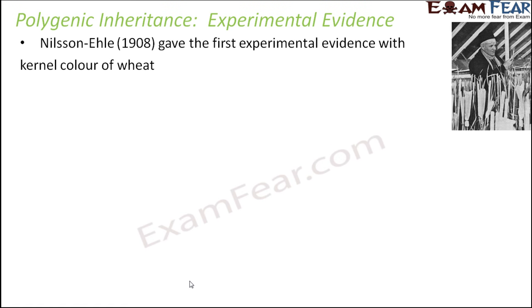So Nilsson-Ehle in 1908 gave the first experimental evidence using kernel color of wheat. What he did was he crossed a red-kernelled variety with a white-kernelled variety of wheat.